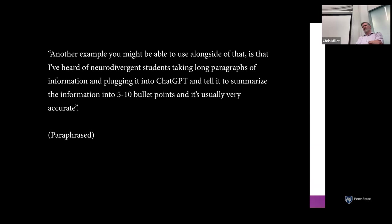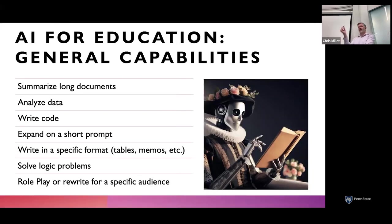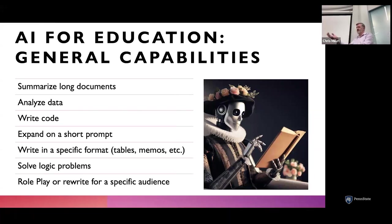For neurodivergent students, taking long paragraphs of information and telling the AI to summarize them into five to ten bullet points can be very helpful — it's usually quite accurate at restructuring information clearly. Similarly, if you have a hard time communicating clearly because of neurodivergence or because English is your second language, you can put your ideas together as best you can and say 'rewrite this more clearly for me.' That's a genuinely beneficial use of the technology.